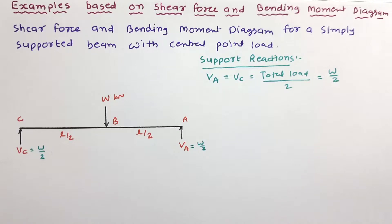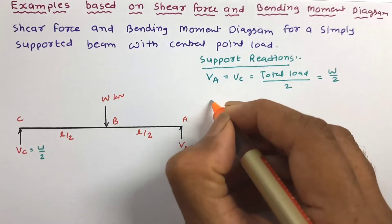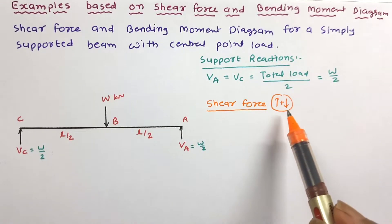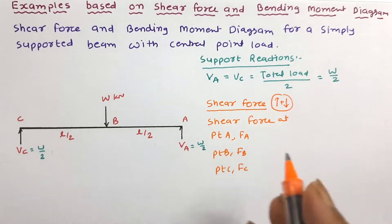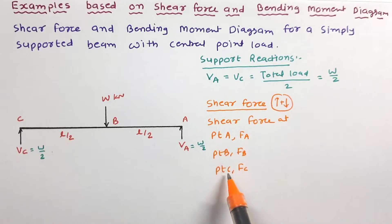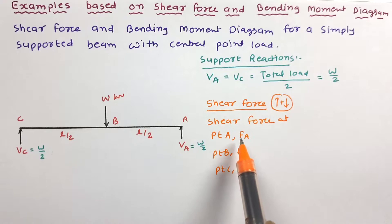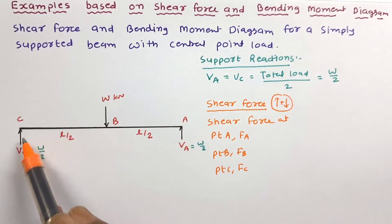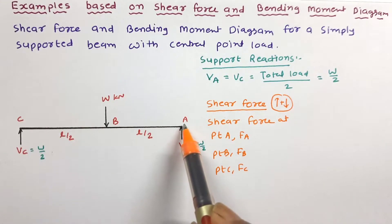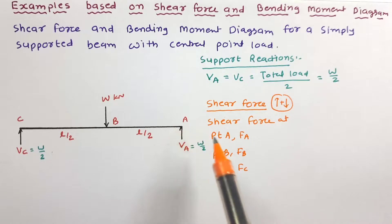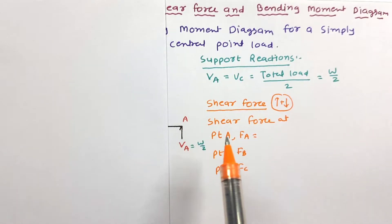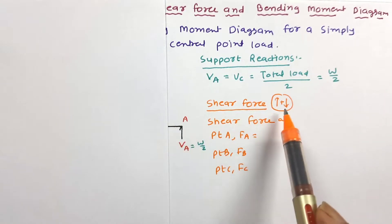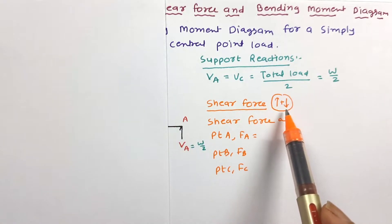Now to draw the shear force diagram, let us work out the shear force at important points. This is the sign convention for shear force. We need to work out shear force at the three important points A, B, and C. Starting from the right hand side of the beam, downward forces are taken as positive.